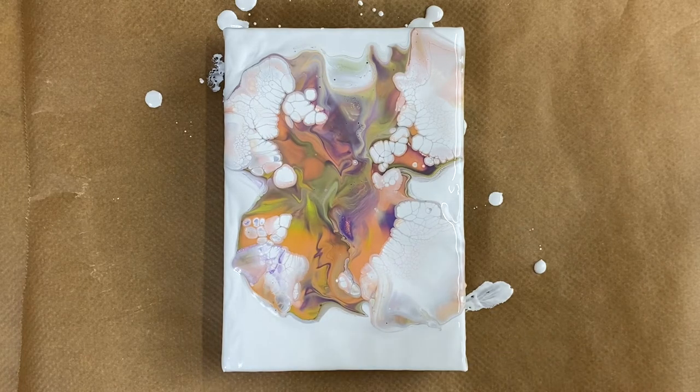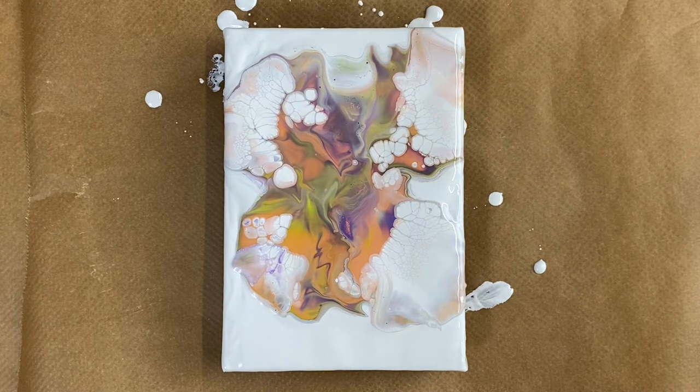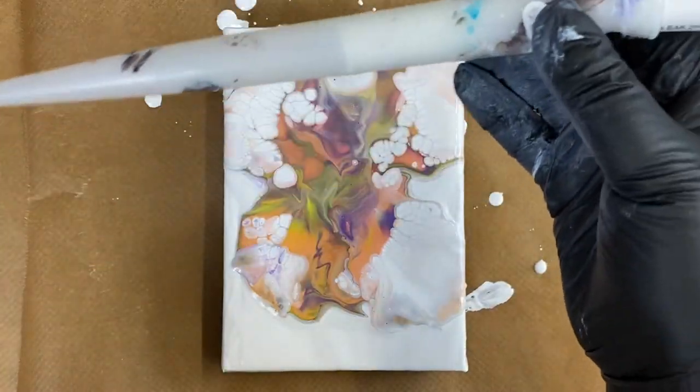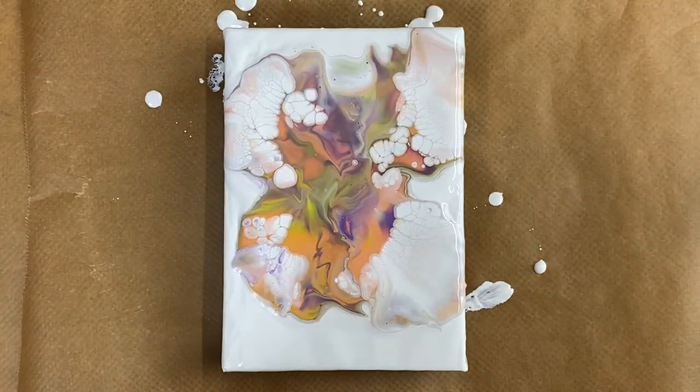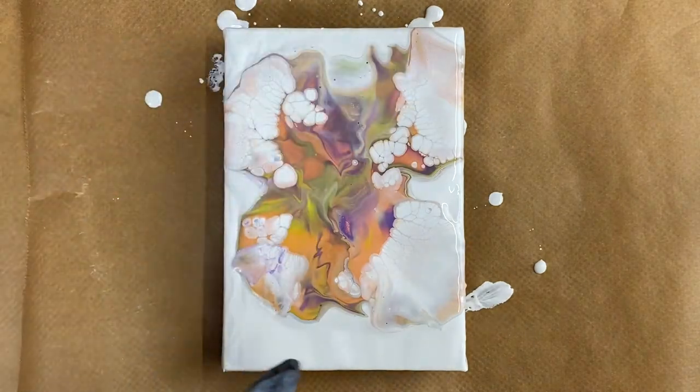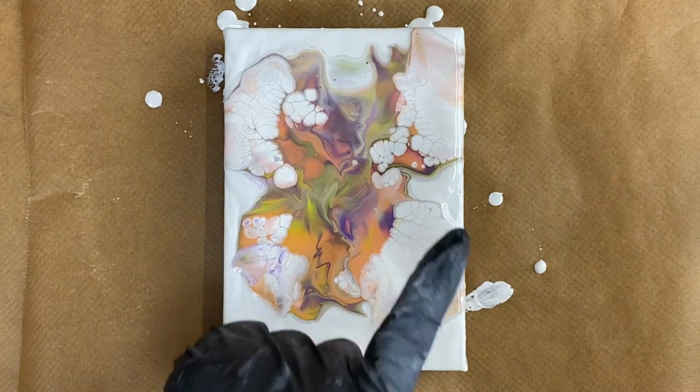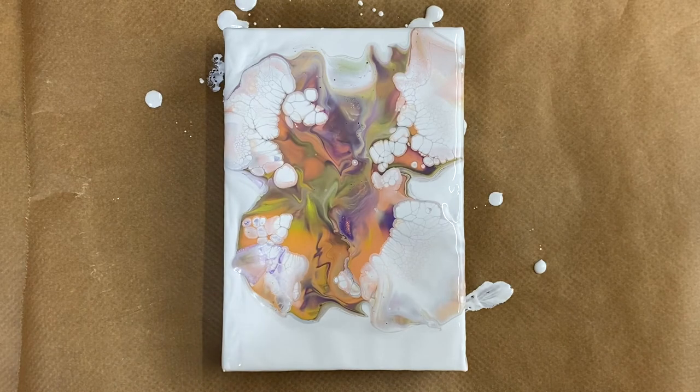So what I'm going to do now is I'm going to get my little turkey baster, the same as what I've done with the other two, and I'm going to blow these edges out. That's really surprised me that has, so that must be that Montmartre paint, how that's reacting.